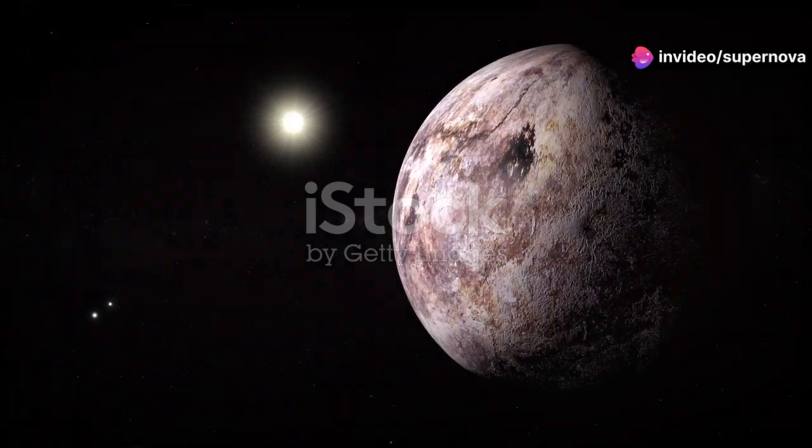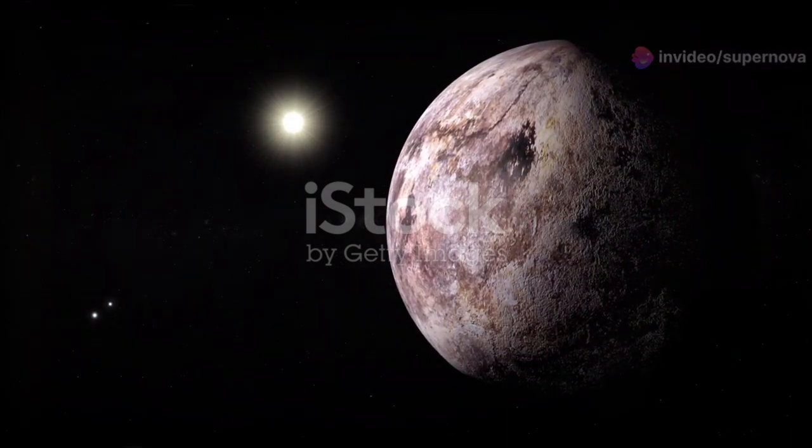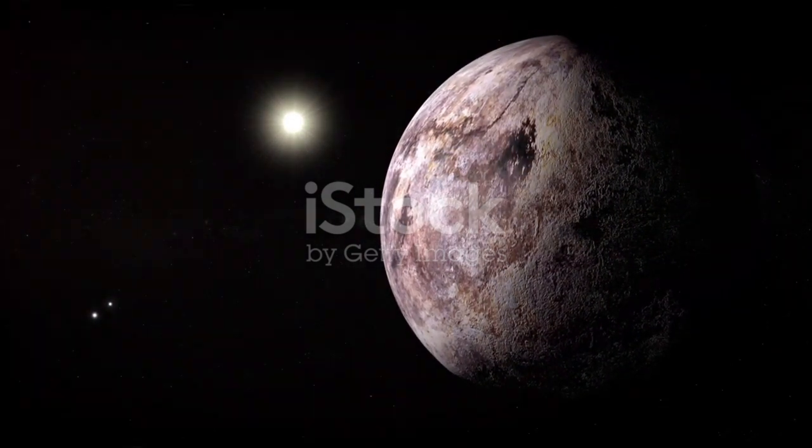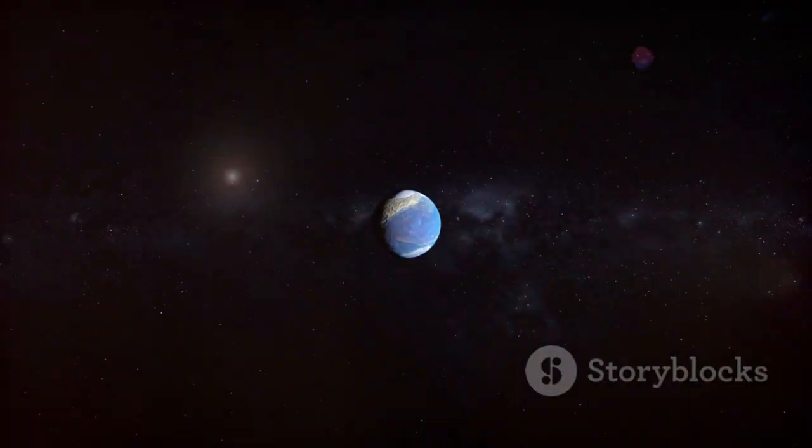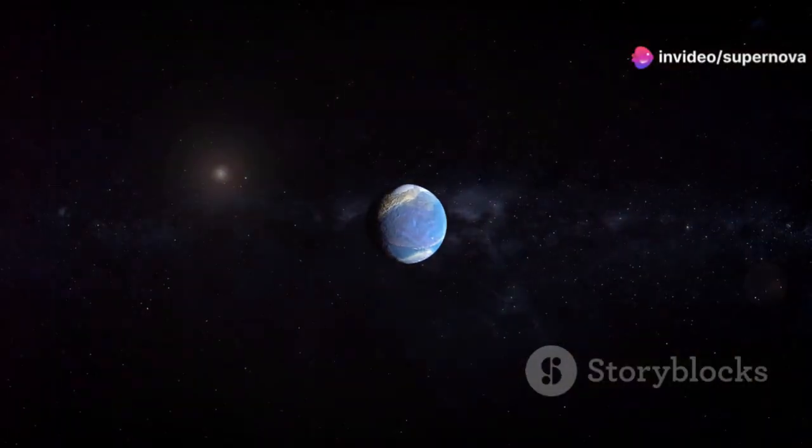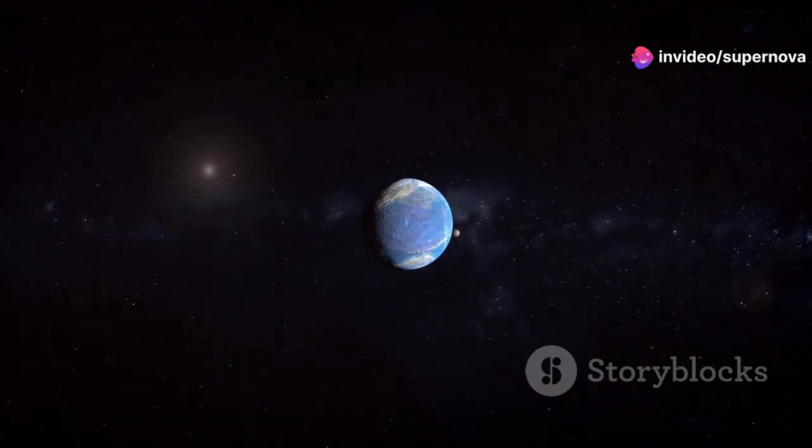Proxima b orbits very close to its star, much closer than Earth orbits the Sun, at a distance of just 0.05 astronomical units. It completes an orbit in just 11.2 Earth days, which means a year on Proxima b is incredibly short.